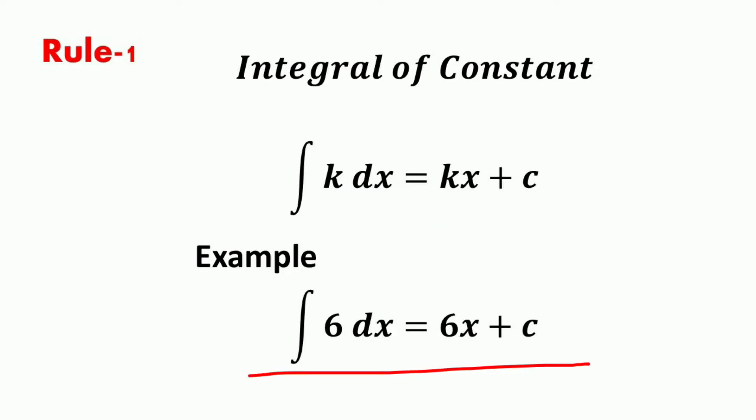For example, the integral of 6 — where 6 is the constant — is equal to the constant times the variable of integration, that is 6 times x, plus an arbitrary constant c. So the integral of 6 is equal to 6x plus c.